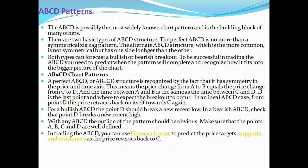A perfect ABCD structure is recognized by the fact that it has symmetry in both price and time axes. This means the price change from A to B equals the price change from C to D, and the time between A and B is the same as the time between C and D. Point D is the latest point where you expect the breakout to occur. In an ideal ABCD, from point D the price retraces back towards C. For a bullish ABCD, point D should break a new recent low; in a bearish ABCD, point D breaks a new recent high.